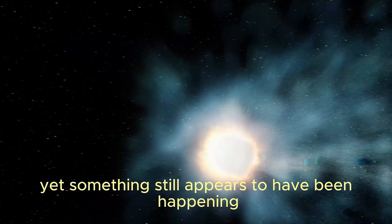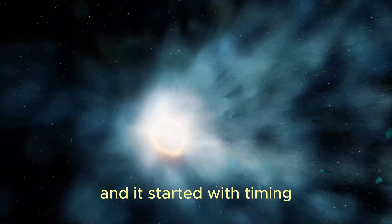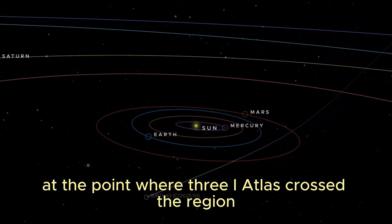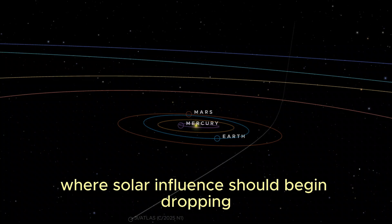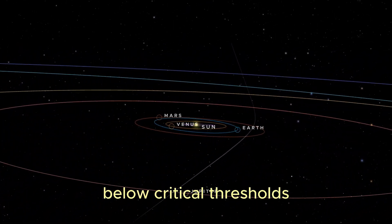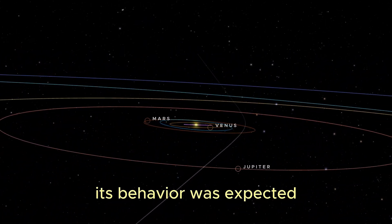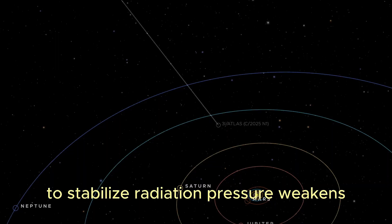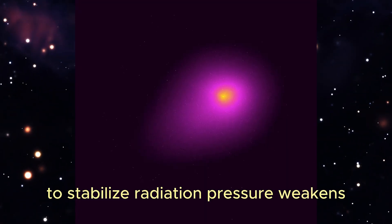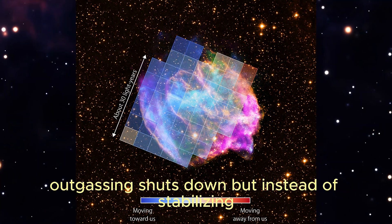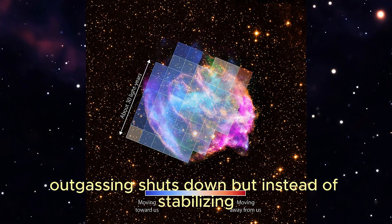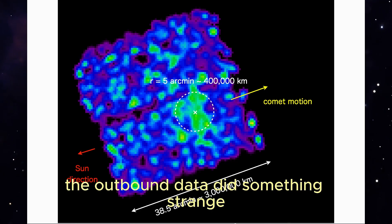Yet something still appears to have been happening, and it started with timing. At the point where 3I Atlas crossed the region where solar influence should begin dropping below critical thresholds, its behavior was expected to stabilize. Radiation pressure weakens, thermal gradients flatten, outgassing shuts down. But instead of stabilizing, the outbound data did something strange. It diverged.